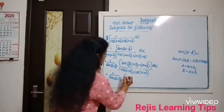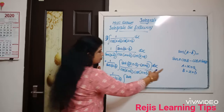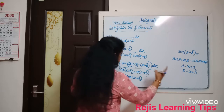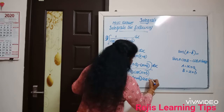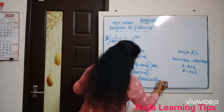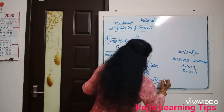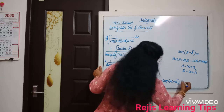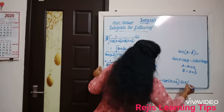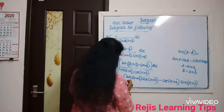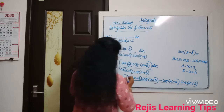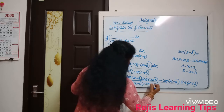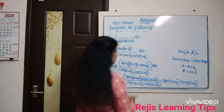Now instead of a we write x plus a, so sin a becomes sin(x+a). And cos b means cos(x+b). So sin a cos b minus cos a sin b becomes sin(x+a)cos(x+b) minus cos(x+a)sin(x+b), all divided by cos(x+a) into cos(x+b). Then dx.